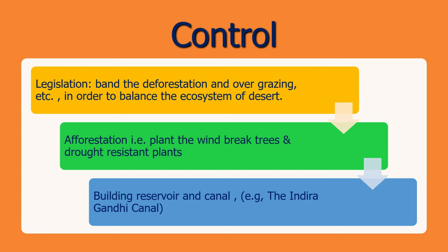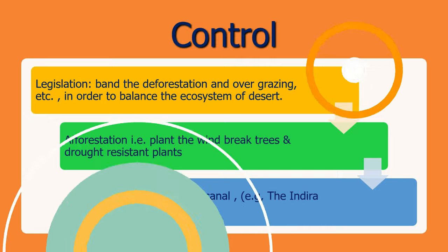Afforestation measures include planting windbreaks, trees, and drought-resistant plants. Finally, build reservoirs or canals that can hold large amounts of water and carry it from one place to another. This was all about desertification.